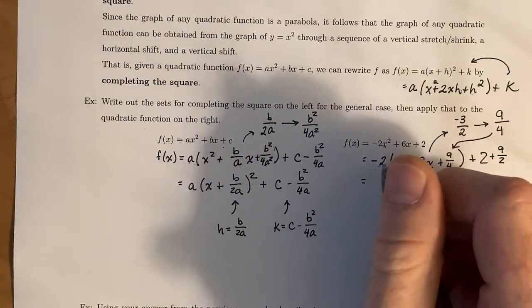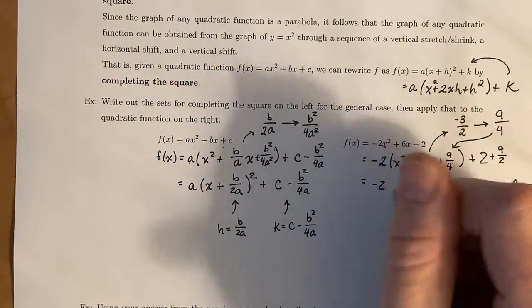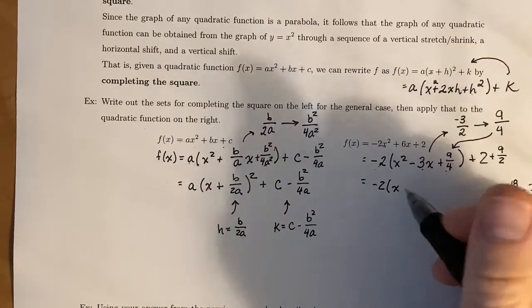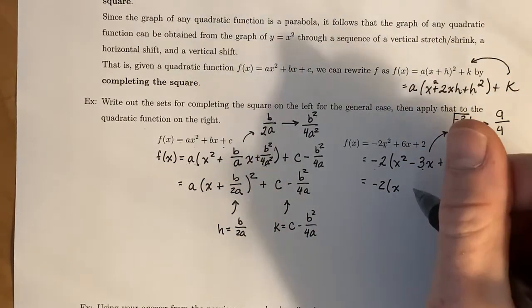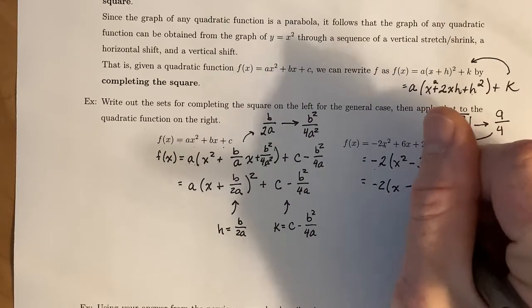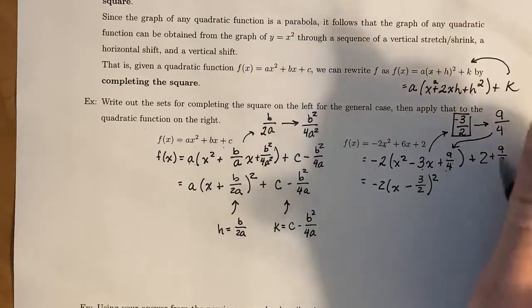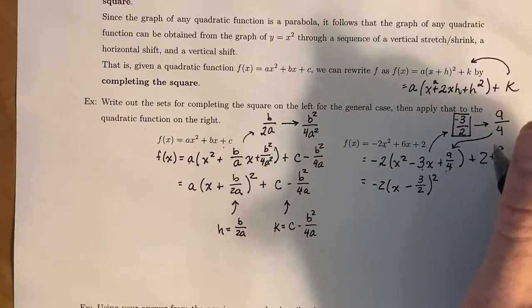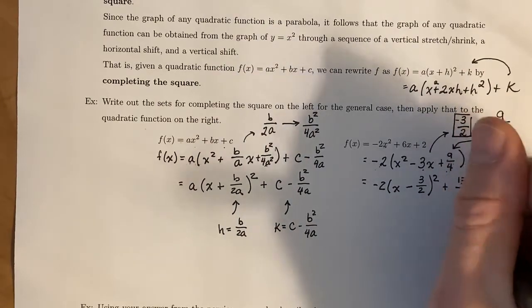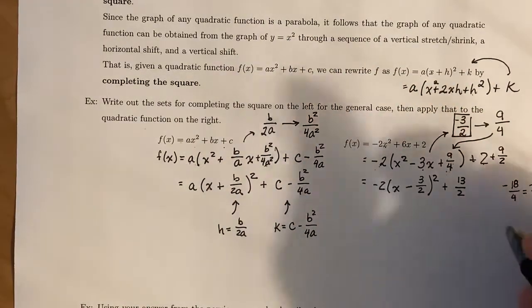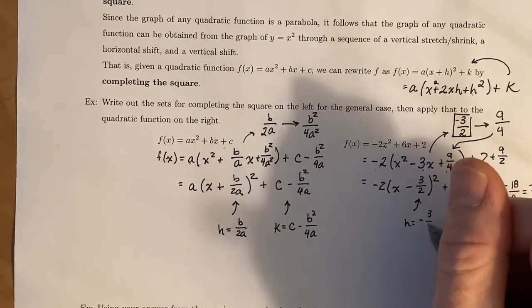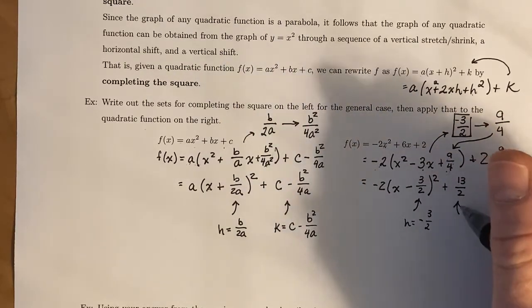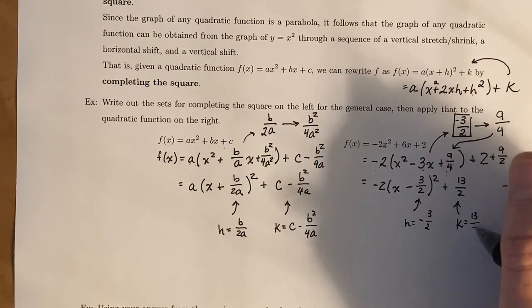Now we're able to take this and factor it. So the quick trick is this right here is the number that goes right here. And we can simplify this down. 2 is really 4/2. And once you have common denominators, you can do 4 + 9 giving you 13/2. So this is our h, which is -3/2. And our k, which is 13/2.